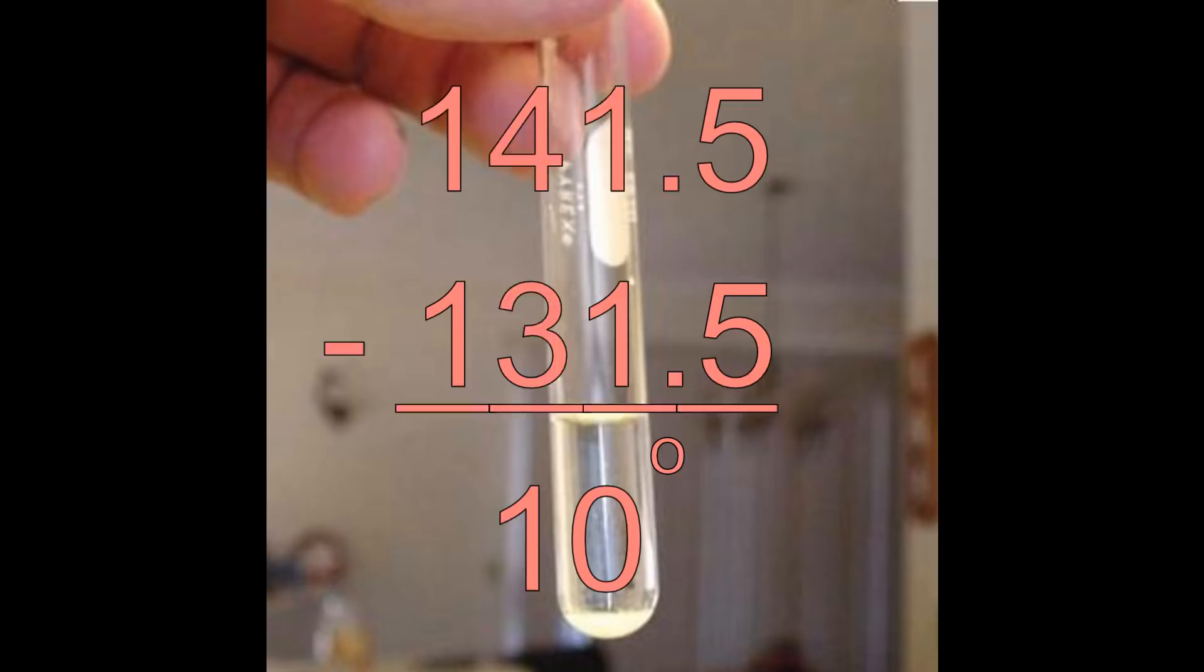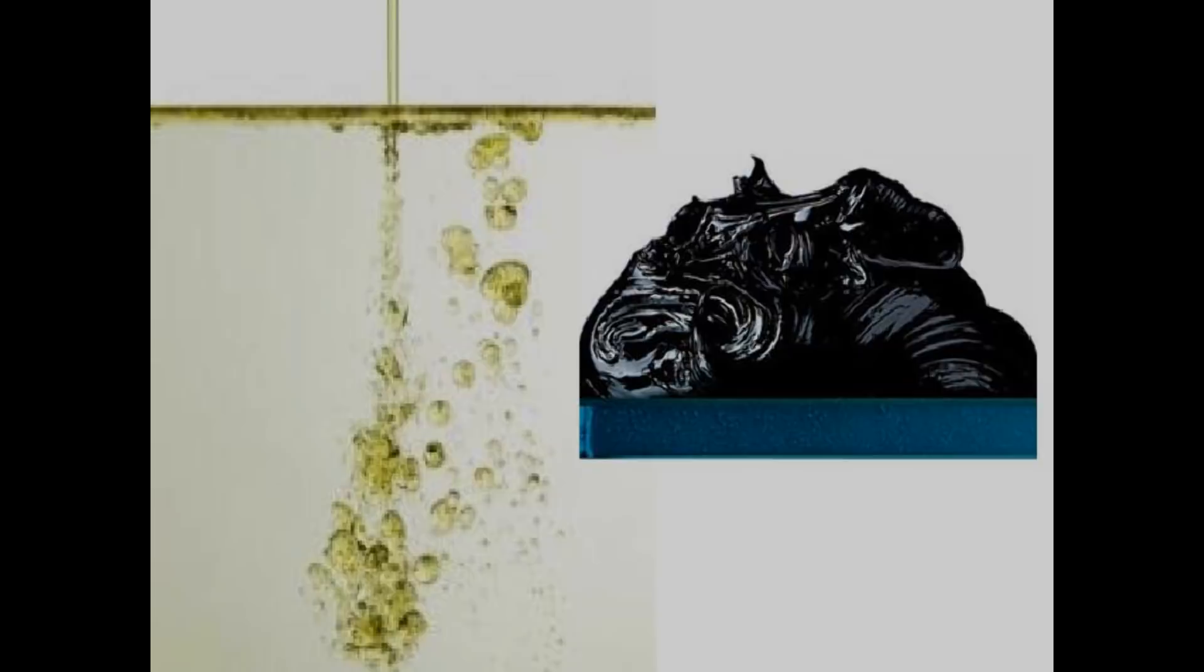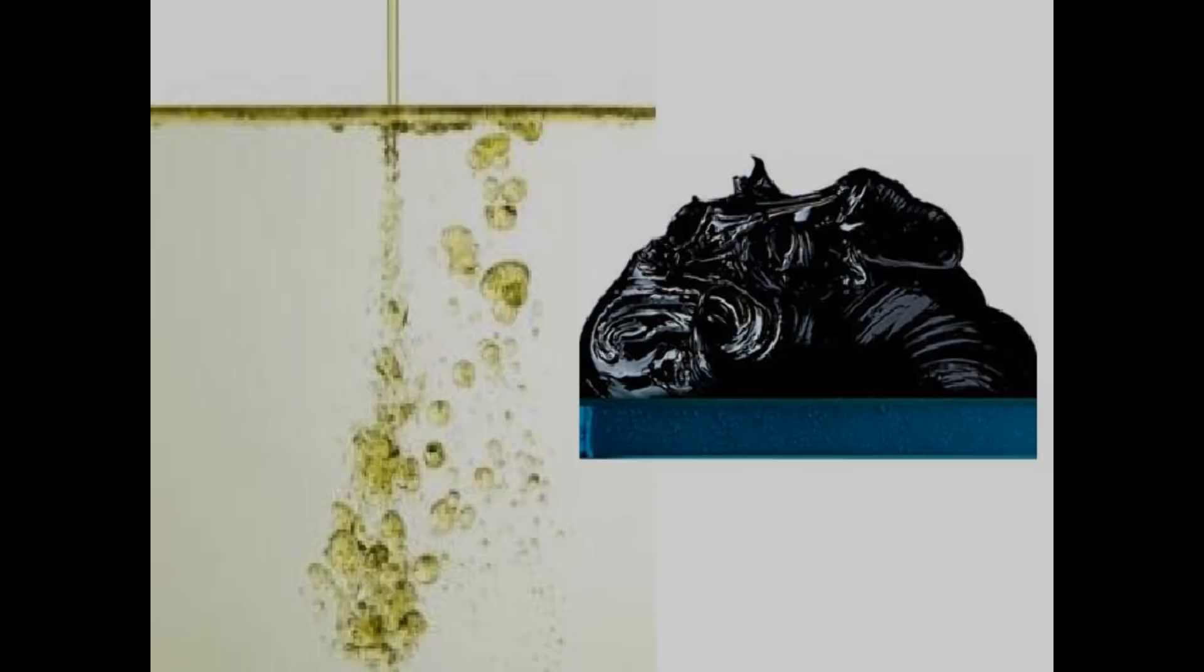Numbers greater than API gravity 10 degrees indicate that the hydrocarbons are lighter than water, and numbers lower mean that the hydrocarbon is heavier. Most oils have a higher API gravity, meaning they are lighter than water, and that is why oil usually floats on top of water. There are, however, a few oils that are heavier than water. We'll discuss them later.